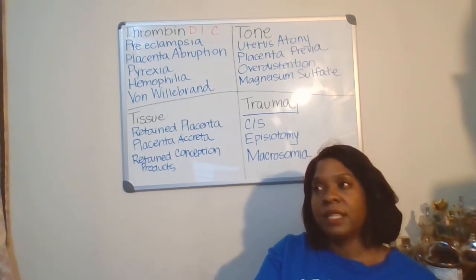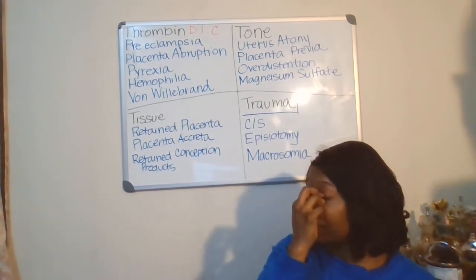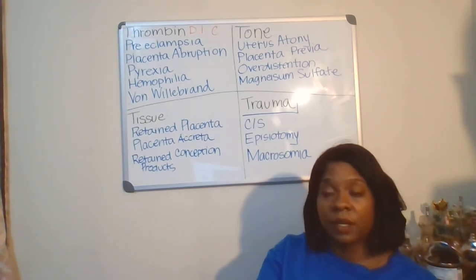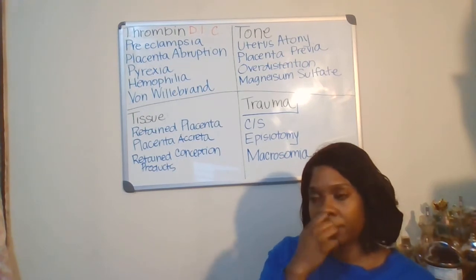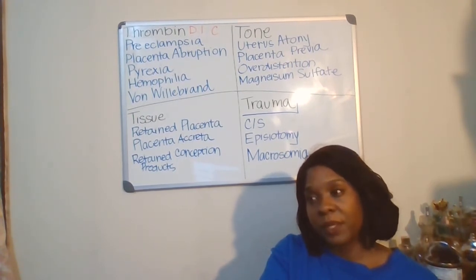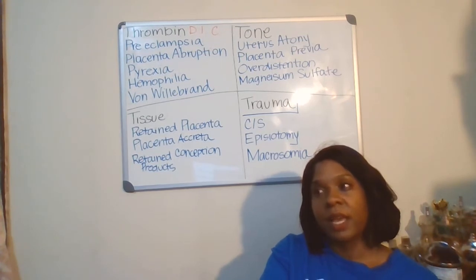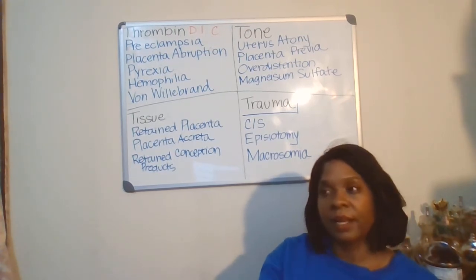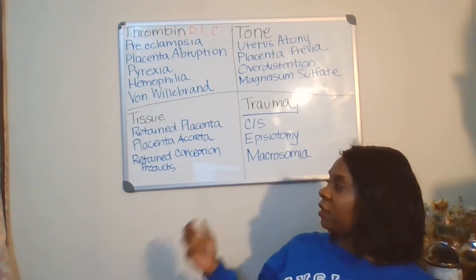With retained placenta tissue issues — if you have a piece of your placenta still left in there, which can occur up to six weeks after you leave the hospital, you're not going to be able to involute. You're going to be subinvoluted, which means that you have this big gaping hole that is not contracting down, not going back to pre-pregnancy size, and it's bleeding. That is over retained placenta.